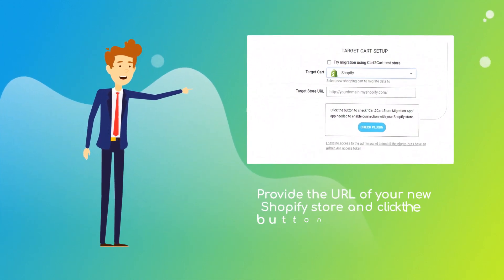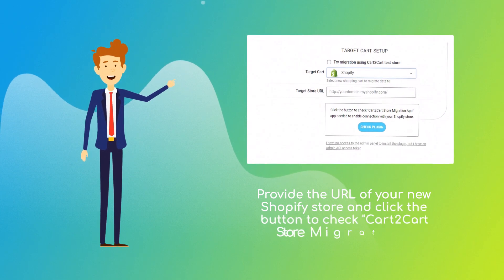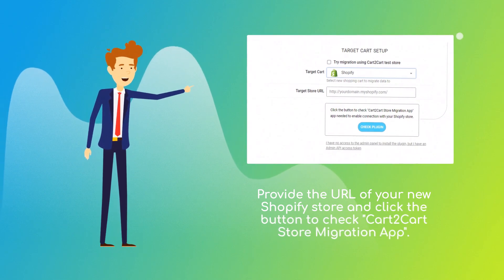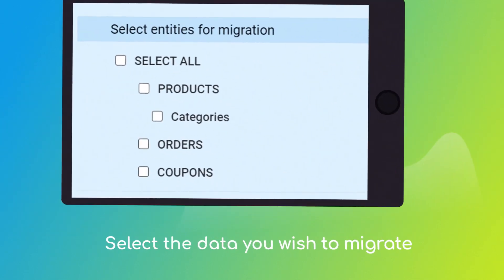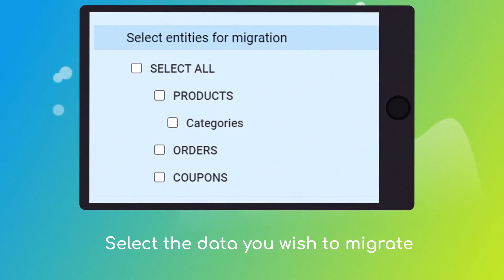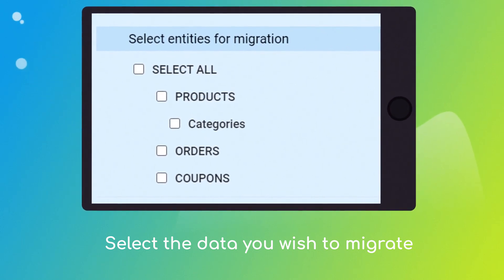Next, provide the URL of your new Shopify store and click the button to check the Cart2Cart store migration app. Once done, click the Choose Entities button to select the data types you'd like to migrate to Shopify.